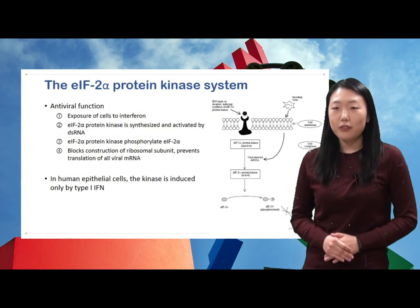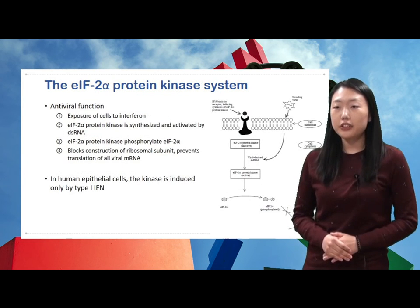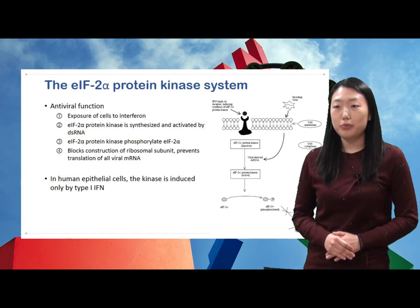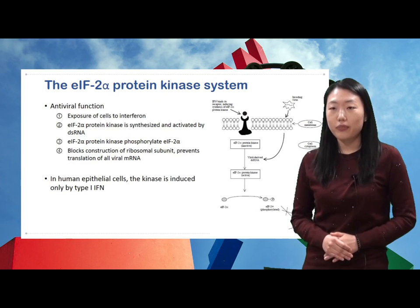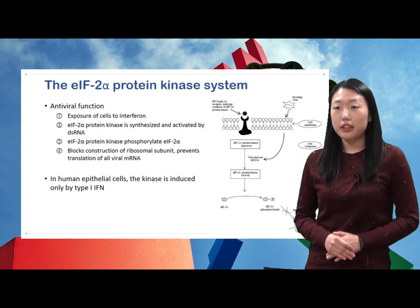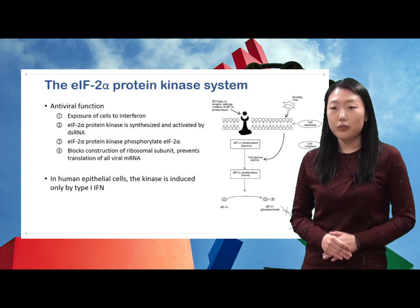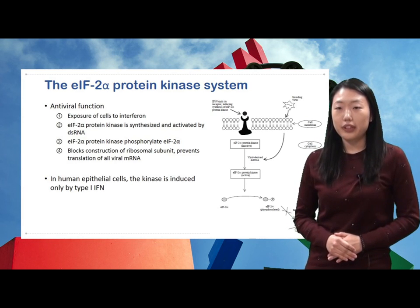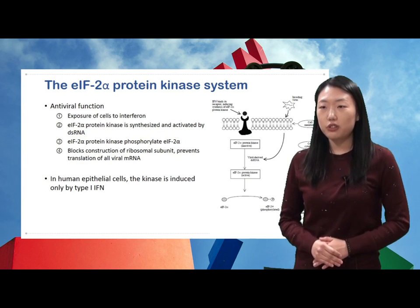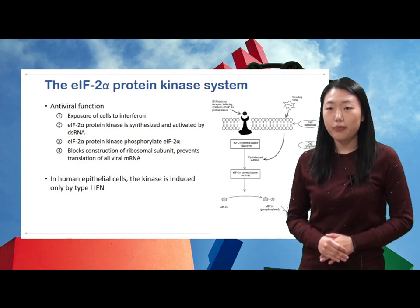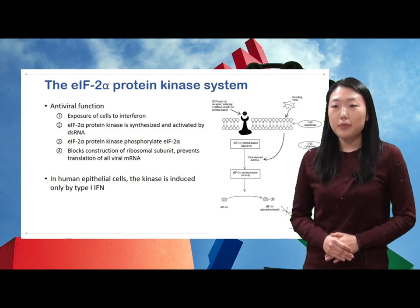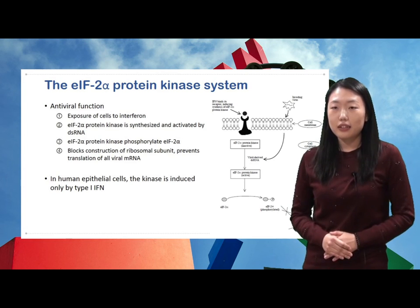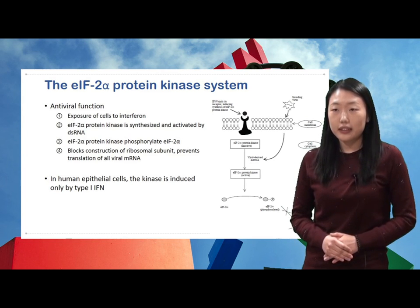The EIF-2 alpha protein kinase also functions as an antiviral system. Interferon binding causes EIF-2 alpha protein kinase synthesis. Viral-derived double-stranded RNA activates EIF-2 alpha protein kinase. The activated kinase phosphorylates EIF-2 alpha protein, which blocks construction of a ribosomal subunit. Therefore, viral mRNA translation is blocked. The EIF-2 alpha protein kinase is induced by type 1 interferon in humans.